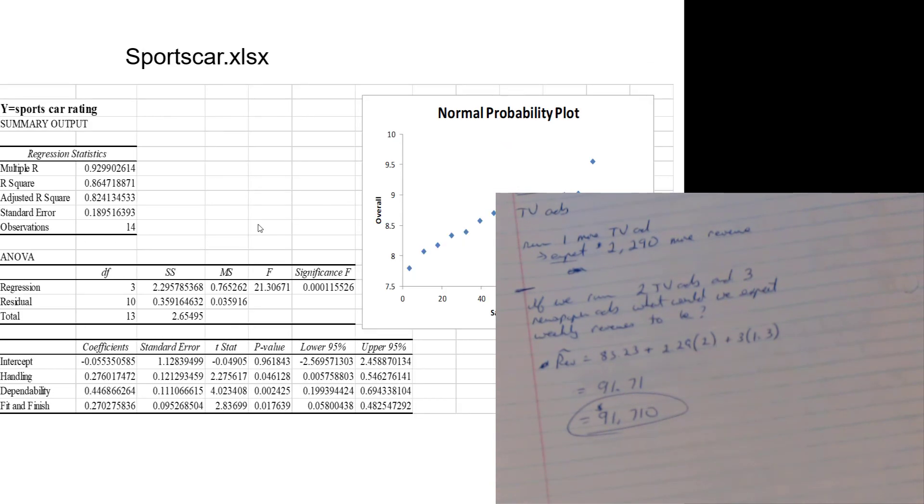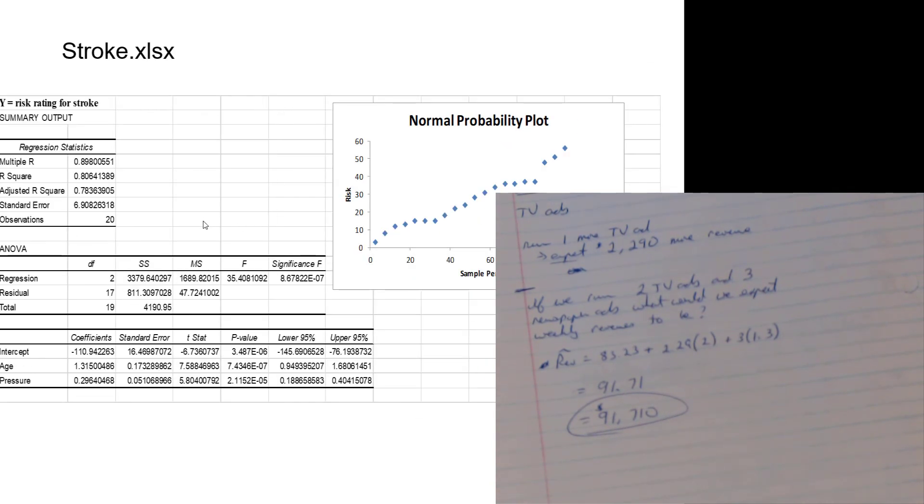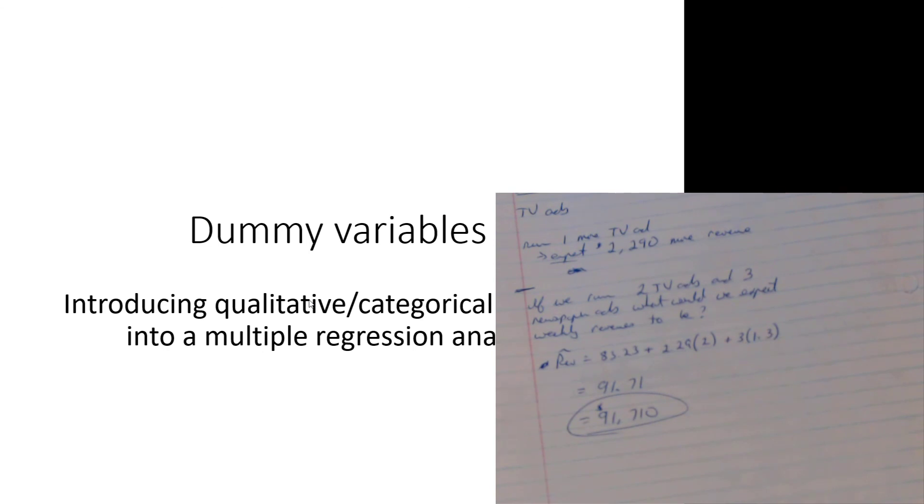I encourage you to do it for the other examples. Now, in the next segment, we'll leap into - well, what happens? Right now, at this point, we've only talked about quantitative variables as our independent variables. What if we have qualitative or categorical variables that we want to bring into our regression equation because they do help explain things? How do we do that? The major way we do that is through the use of dummy variables, which is coming up next.